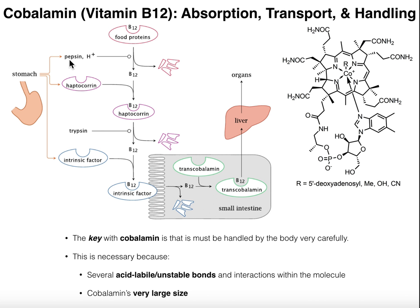When pepsin — which is an enzyme that degrades proteins — degrades this food protein, the B12 gets released, but the B12 will hopefully very quickly be picked up by haptocorin. So haptocorin is sort of a transient carrier of the B12 molecule.